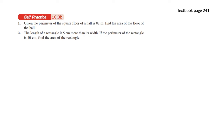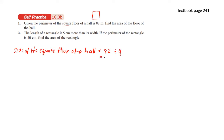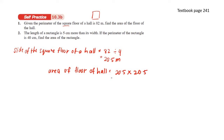Given the perimeter of the square floor of a hall is 82 meters, find the area of the floor of the hall. Since it is a square, all sides are equal. So we have 82 divided by 4, which gives us 20.5 meters on each side. So in order to find the area, we have 20.5 times 20.5, and that will give us 420.25 meter squared.